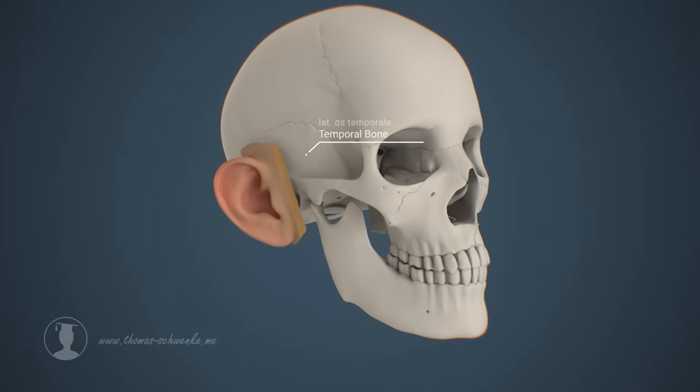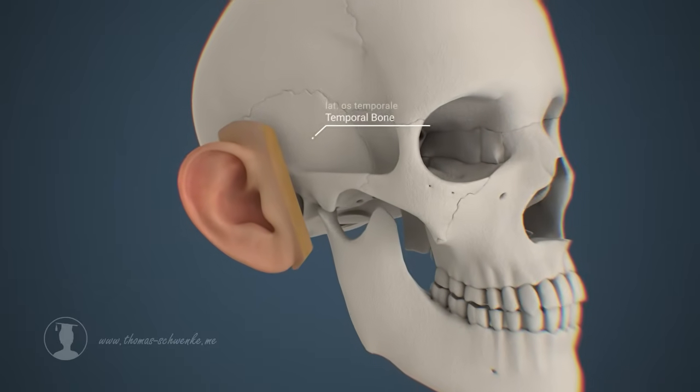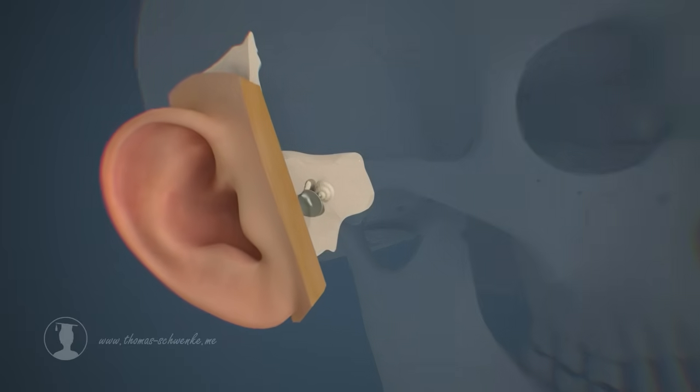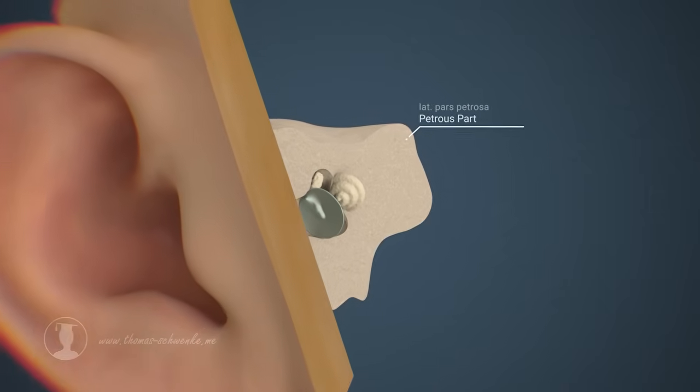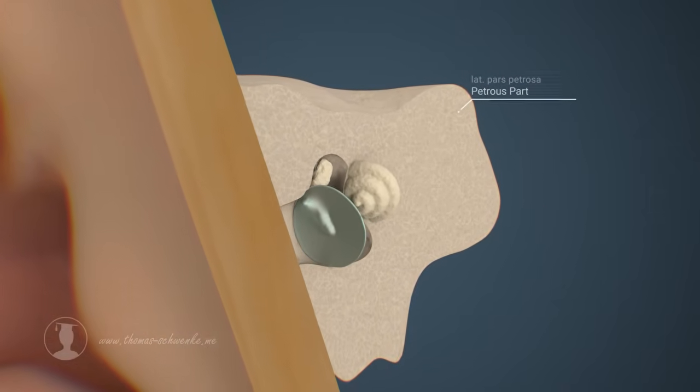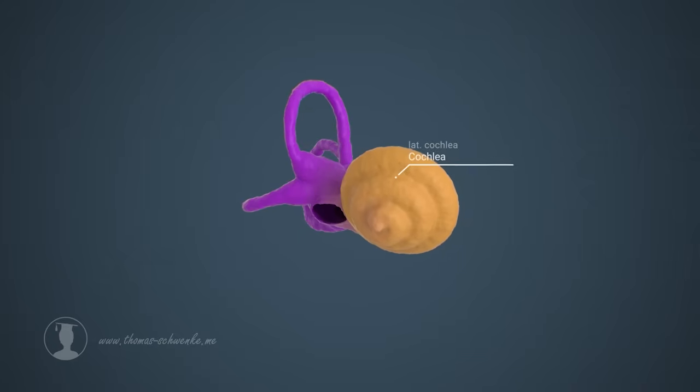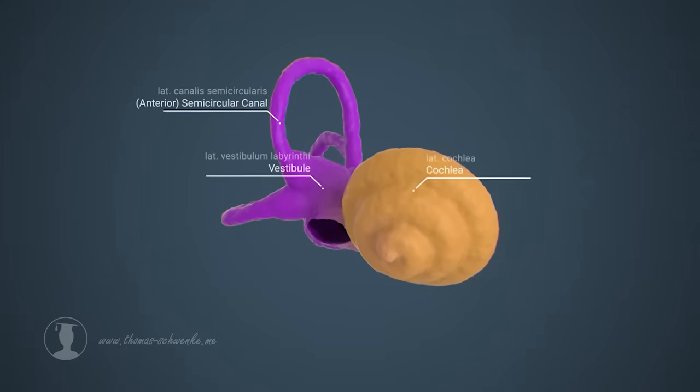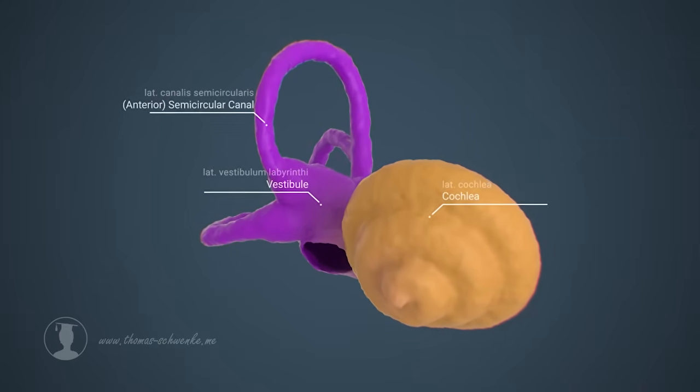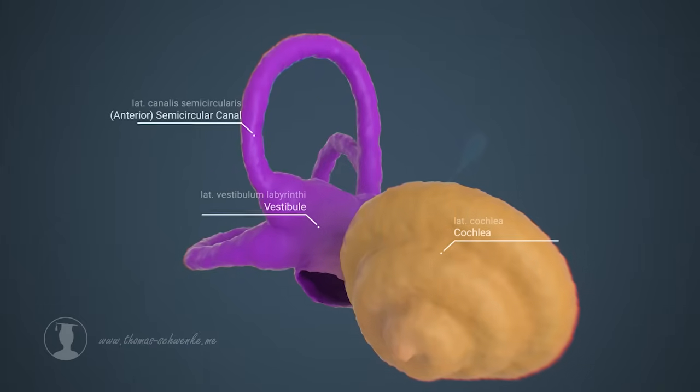Our sense of balance is part of the inner ear, which is located in the petrous part of the temporal bone. In the first part of this series, we discovered the cochlea, which allows us to hear. For the sense of balance, humans have the vestibular system, which consists of three semicircular canals and the vestibule.